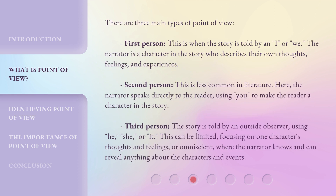There are three main types of point of view. First person: this is when the story is told by an 'I' or 'we.' The narrator is a character in the story who describes their own thoughts, feelings, and experiences.